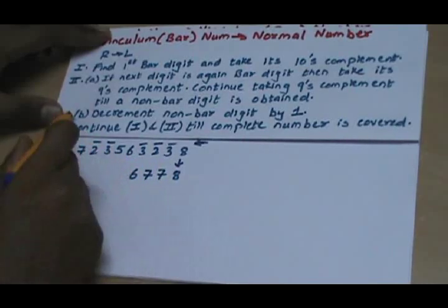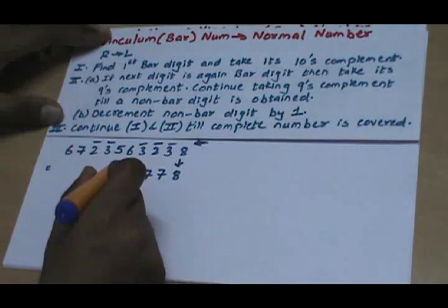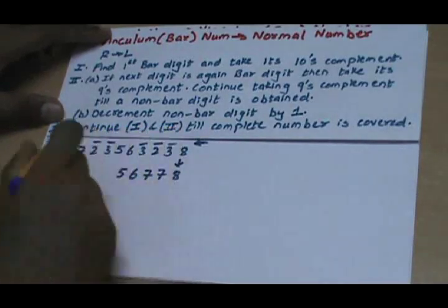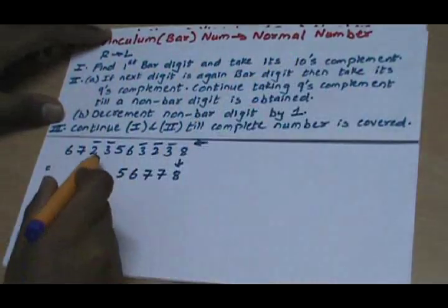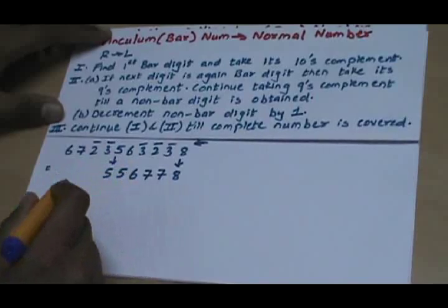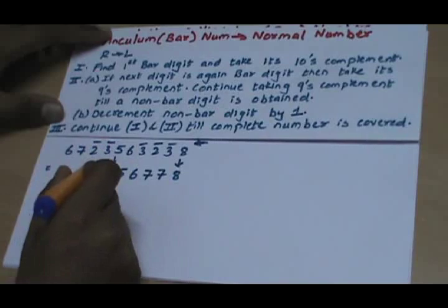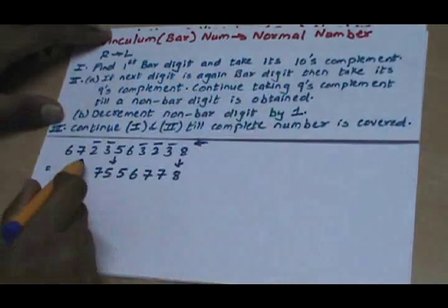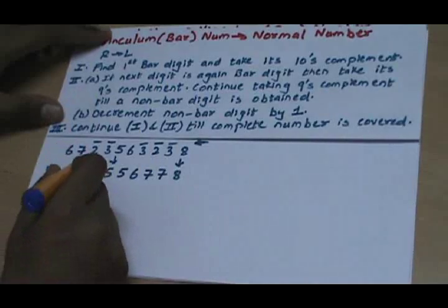When a non-bar digit is reached, go to Step B: decrement the non-bar digit by 1. Decrementing 6 by 1 gives 5. Then go to Step 3, which says continue with Step 1. The next first bar digit is 3̄, so 5 is written as it is, and the tens complement of 3 is 7. The next digit is again a bar digit, so its 9s complement is taken: 9s complement of 2 is 7.